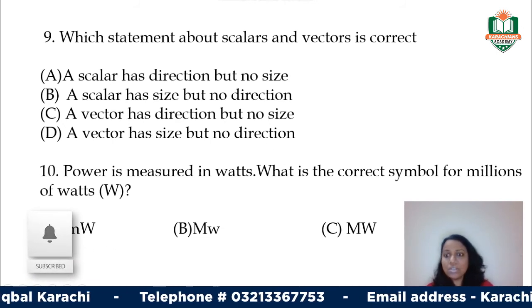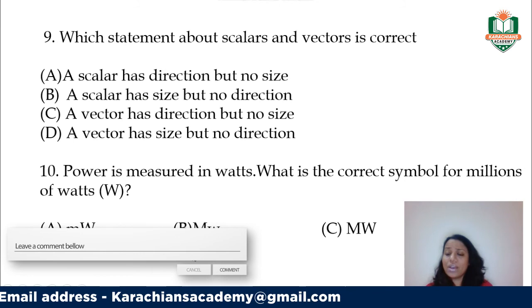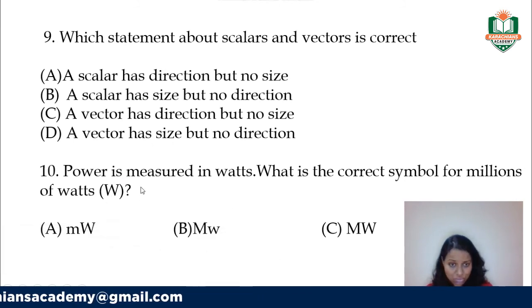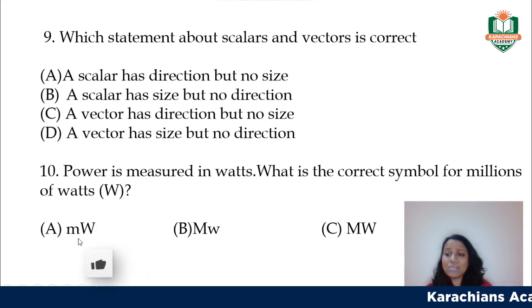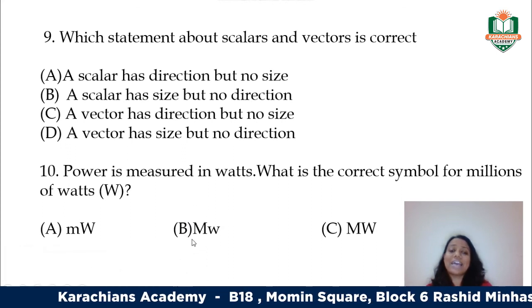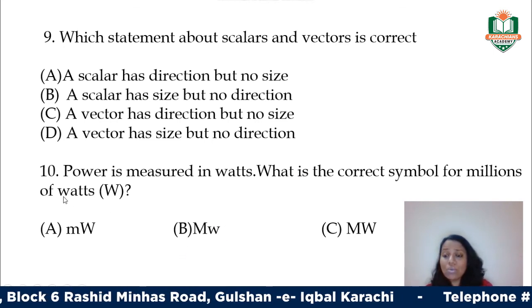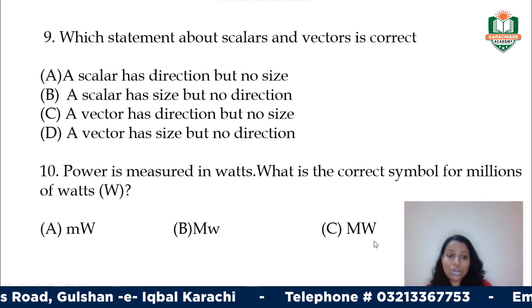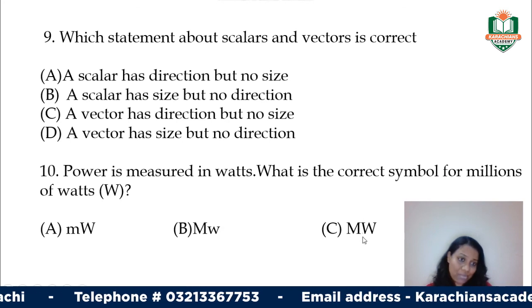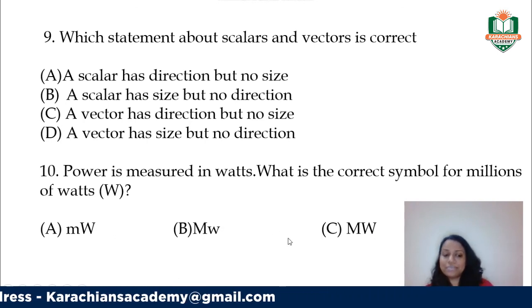The last question concerns symbols: power is measured in watts — what is the correct symbol for millions of watts? Small m is milli, so small m and capital W is milliwatts — wrong. Capital M can mean mega or million. Small double-u is wrong. Capital M for million and capital W for watts gives MW — megawatts. So option C is your correct answer. That's it for today — hope to see you all next time.